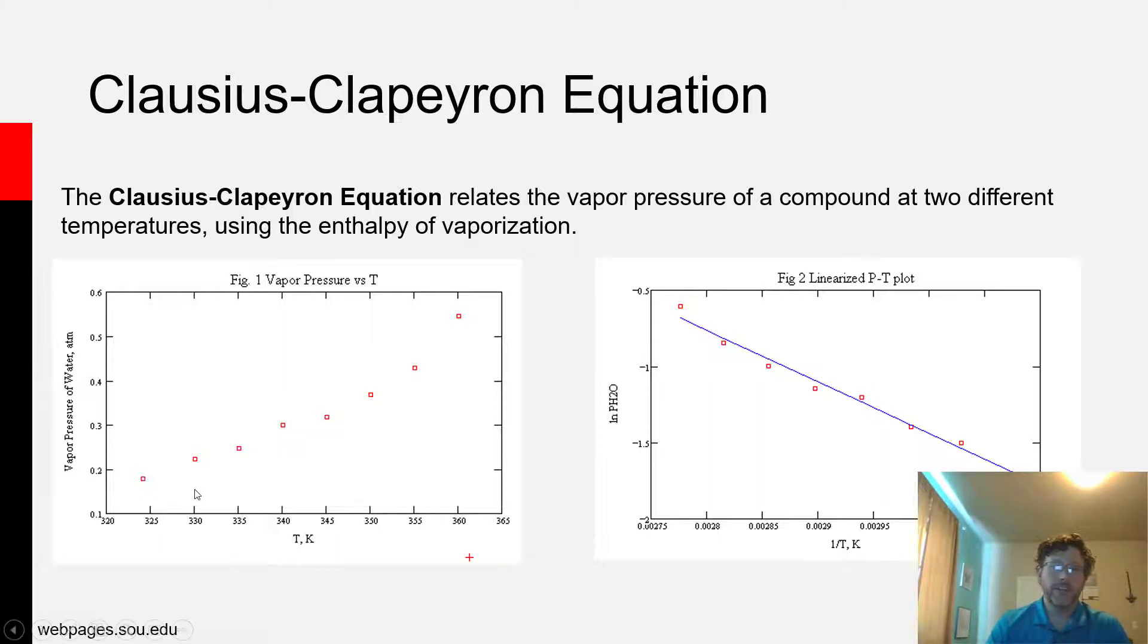So if I were to plot in an experiment the vapor pressure of water at a variety of temperatures, whether in Celsius or Kelvin, I wouldn't see a straight line relationship between the vapor pressure of the liquid in the gas phase and the temperature. Instead, I'd see a curving trace that is relatively flat in some regions but then begins to get steeper and become a little bit exponential.